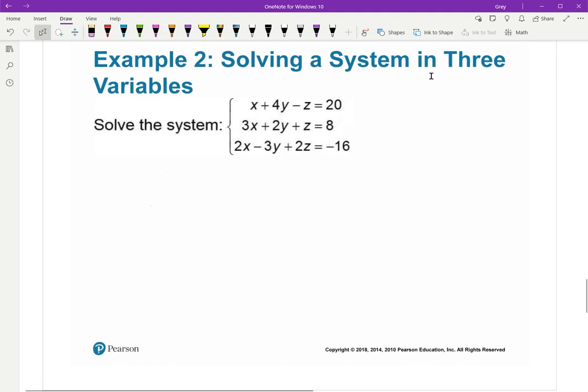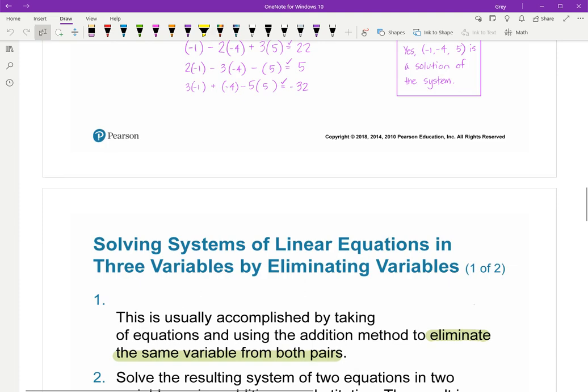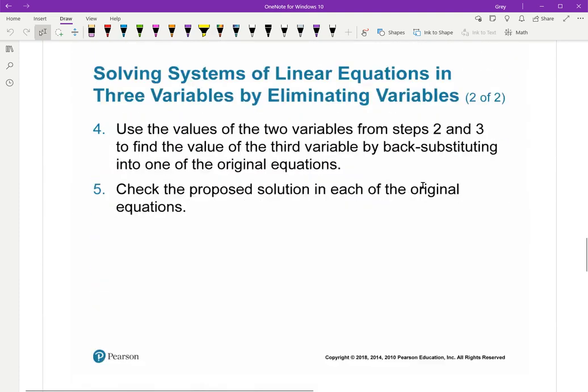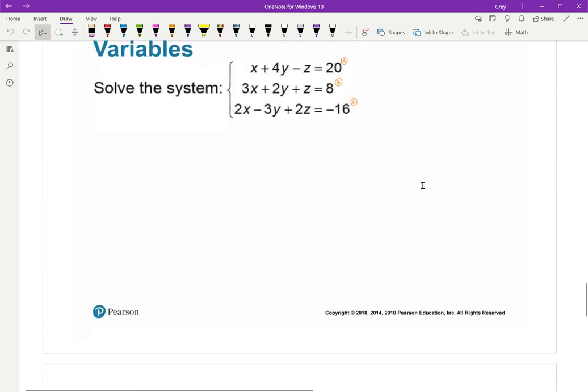I have X plus 4Y minus Z equals 20. I'm going to call that equation A. 3X plus 2Y plus Z is equation B. And 2X minus 3Y plus 2Z equals negative 16 is equation C. So, I'm going to combine two pairs. I'm going to do A and B, A and C, or B and C.